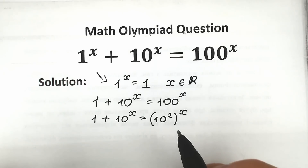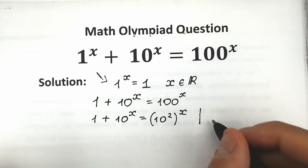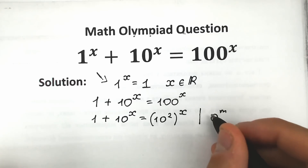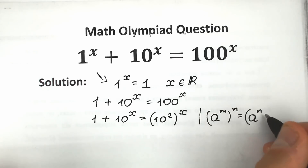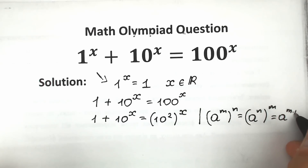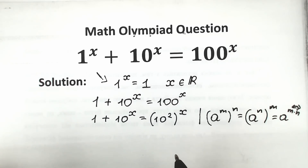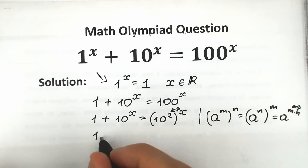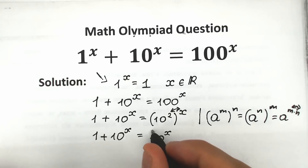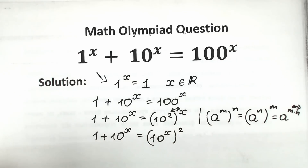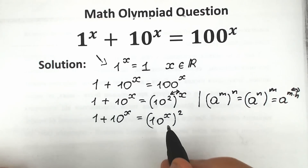Now we need to apply the rule of interchange. If we have a to the power m, all raised to the power n, we can write it as a to the power m times n. Because multiplication is commutative, we can swap the exponents. So (10 squared) to the power x becomes 10 to the power 2x. We now have: 1 plus 10 to the power x equals 10 to the power 2x. This looks like a quadratic equation with exponential elements.